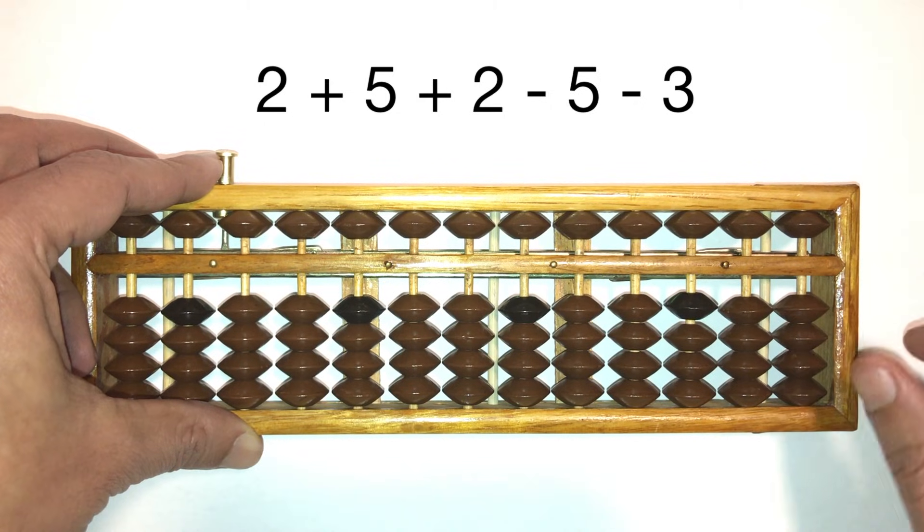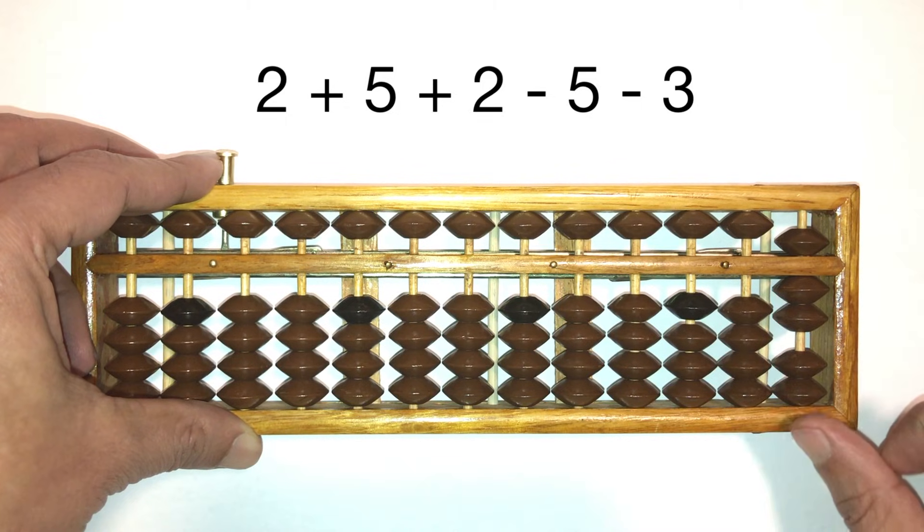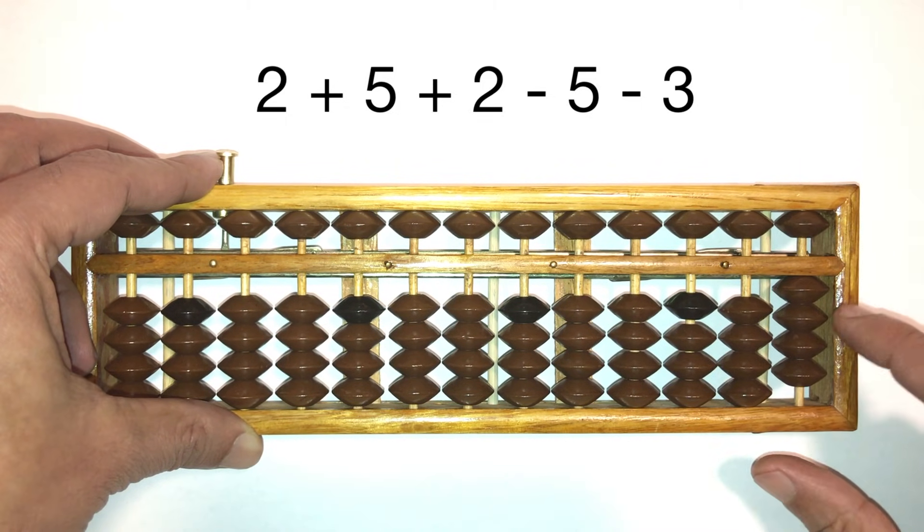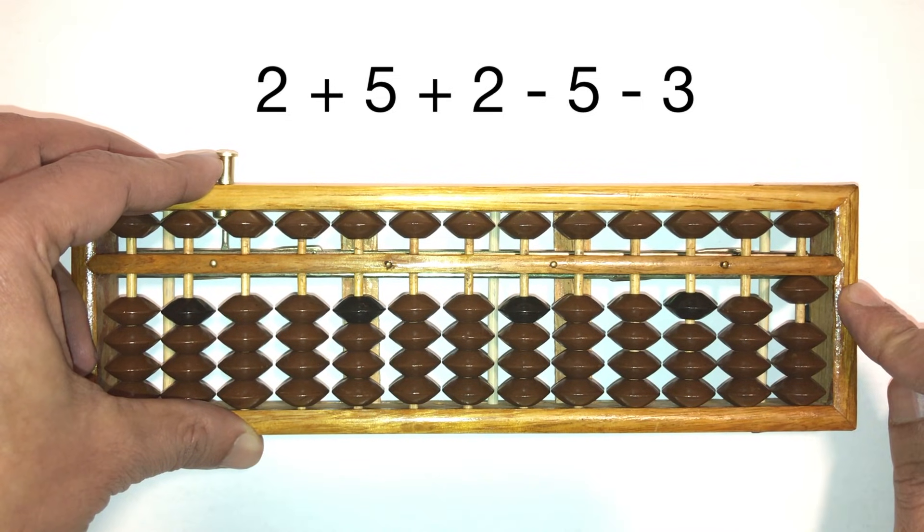Let's do this again. 2 with our thumb, plus 5 with our pointer, plus 2 with our thumb, minus 5 with our pointer, minus 3 with our pointer. The answer is 1.